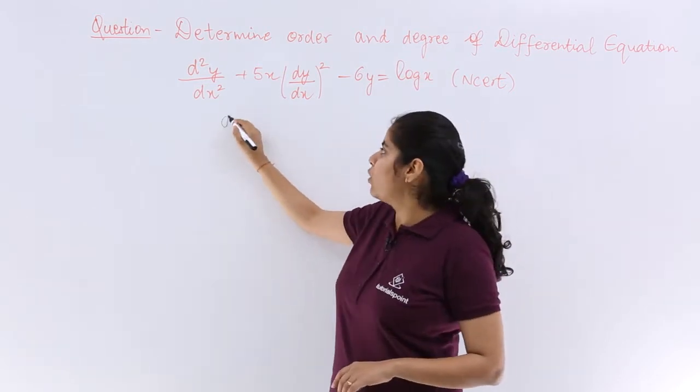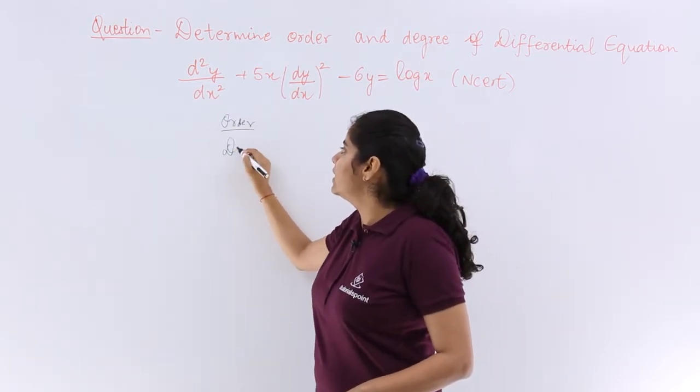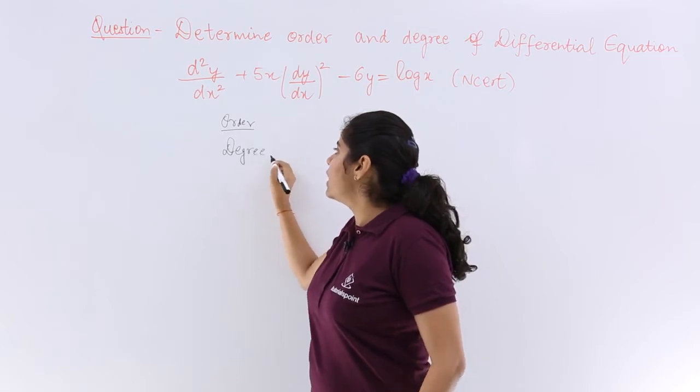So let's write first the order, then the degree, and know what should be the answer for both of these.